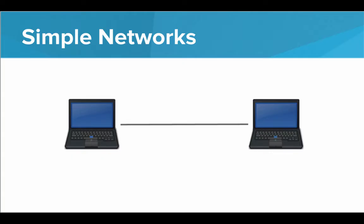So let's look at a simple network. Here we have two computers, and they share a link. That means we can get information from this computer, send it over the link, and it is received on this computer. That's a simple network, two computers that are connected.